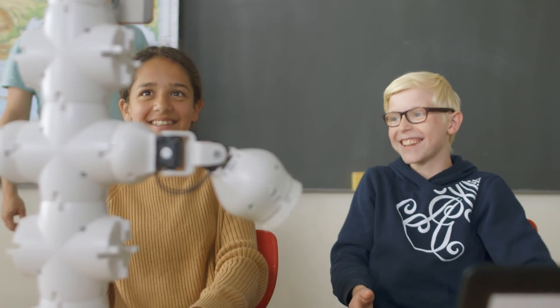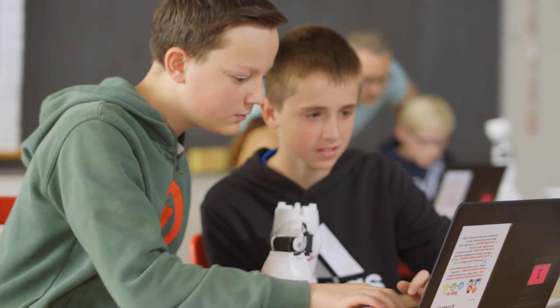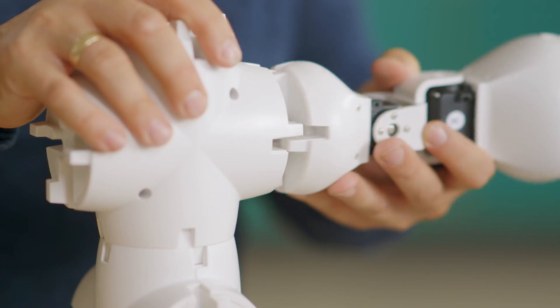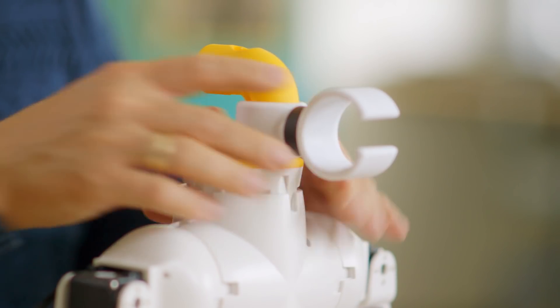Anyone from eight years of age and up can learn to build and program Fable robots. The Fable system is made from robust, easy-to-use modules that students can assemble in seconds.